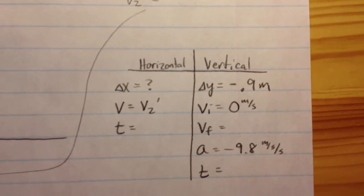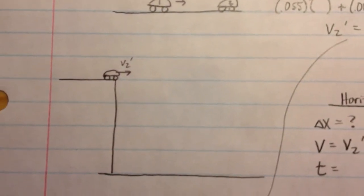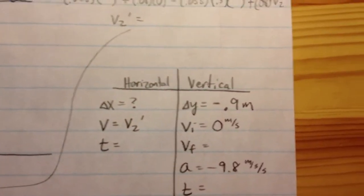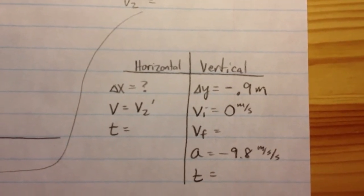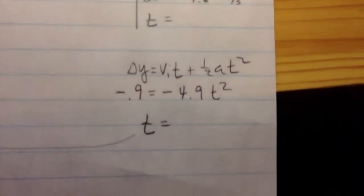The vertical speed is 0 because it's going off the cliff horizontally only. The height of the cliff is 0.9 so you make your delta y negative 0.9 and your acceleration negative 9.8.